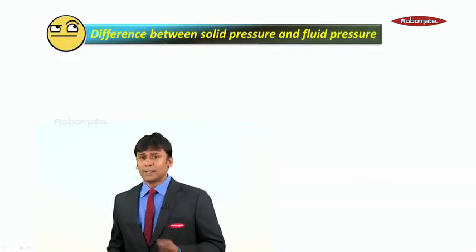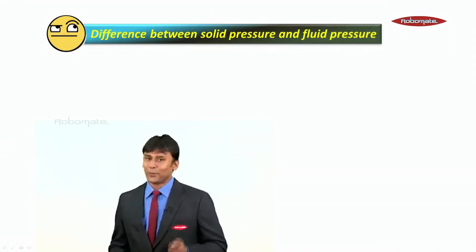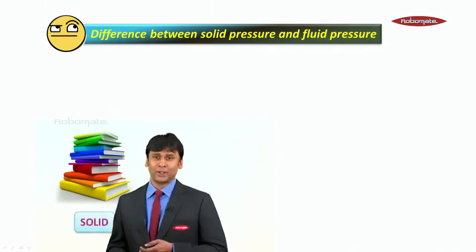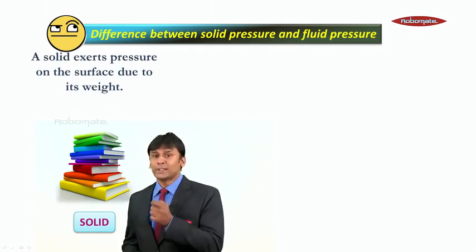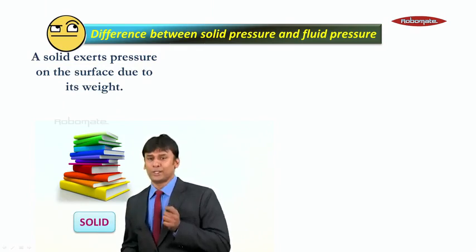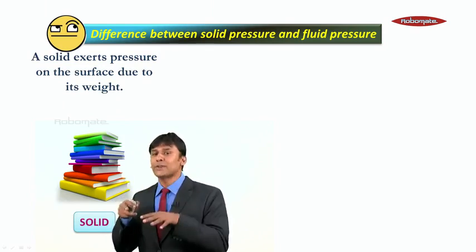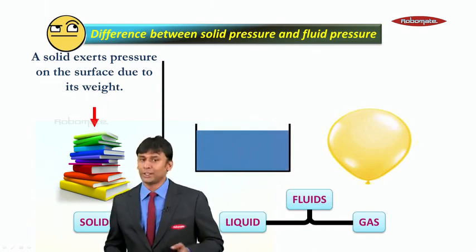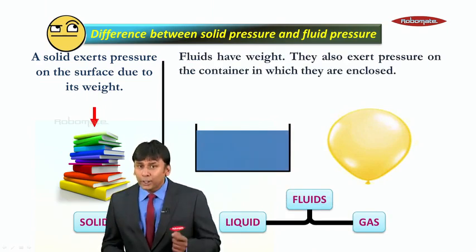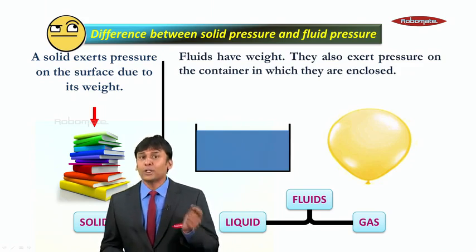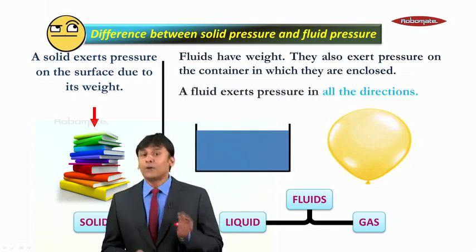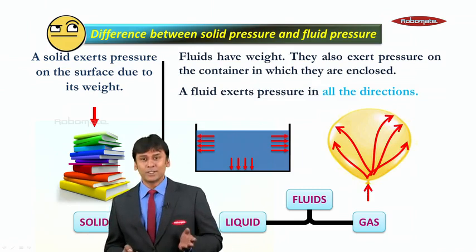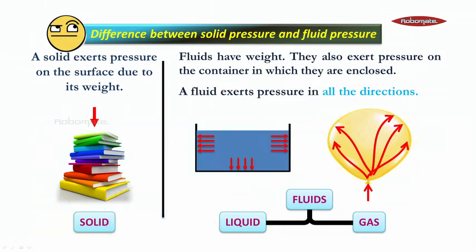Students, let us understand what is the difference between solid pressure and fluid pressure. We take this book, which is a solid. A solid exerts pressure on the surface due to its weight. But in the case of fluids — that is, liquids and gases together called fluids — a fluid has weight and also exerts pressure on the container in which it is enclosed. Secondly, a fluid exerts pressure in all directions. So this is the basic difference between solid pressure and fluid pressure.